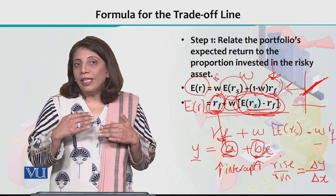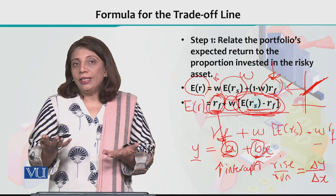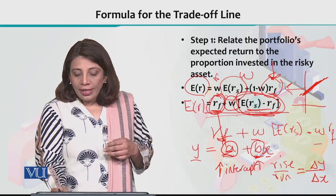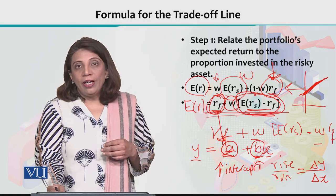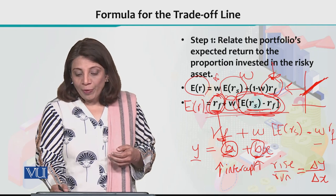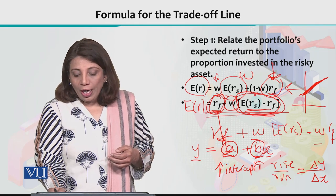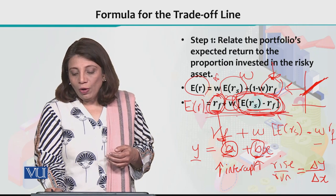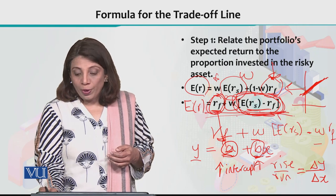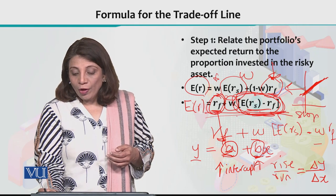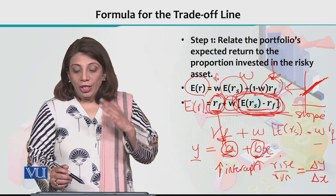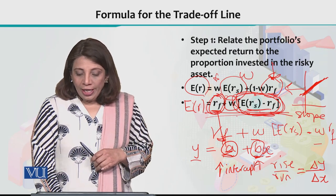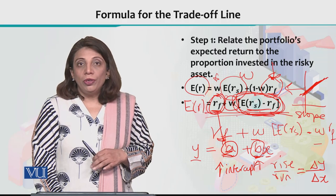The risk premium represents the extra return you receive for bearing risk — it compensates you for the risk you are taking. That additional return is represented by ERS minus RF. This quantity gives you the value of the slope: the steeper the line, the higher the risk premium; the smaller the difference, the flatter the line.